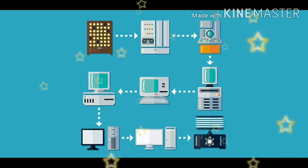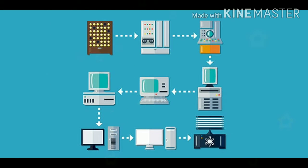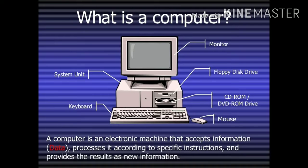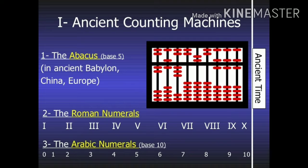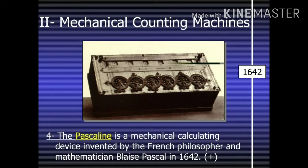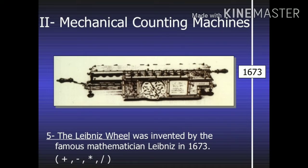In 1943, an electronic computer named the Colossus was built for the military. Other developments continued until in 1946 the first general-purpose digital computer, the Electronic Numerical Integrator and Computer — ENIAC — was built.